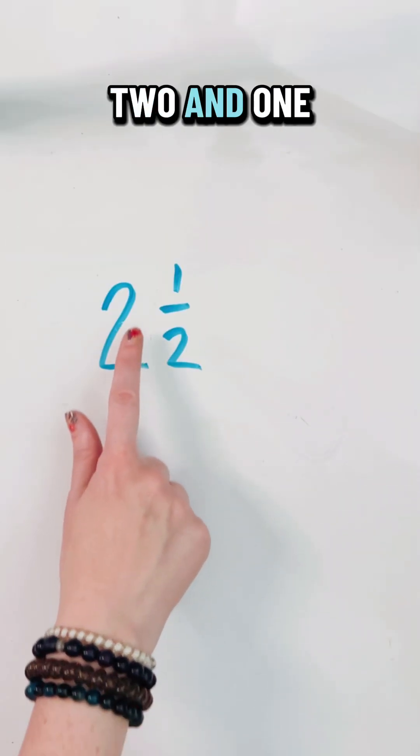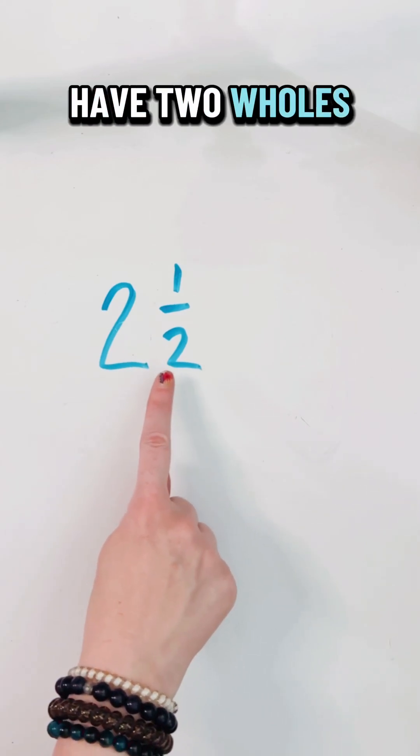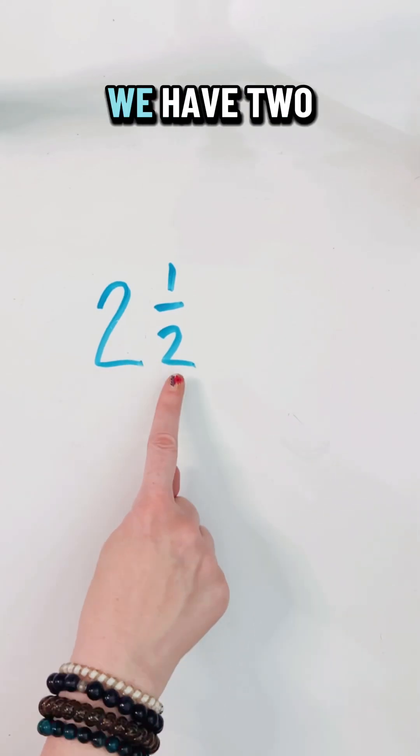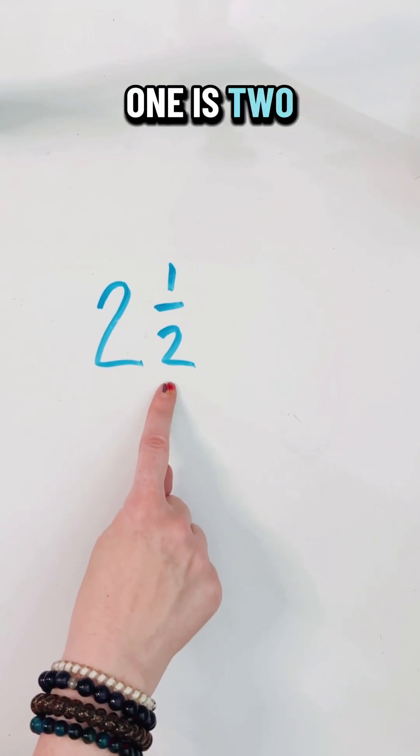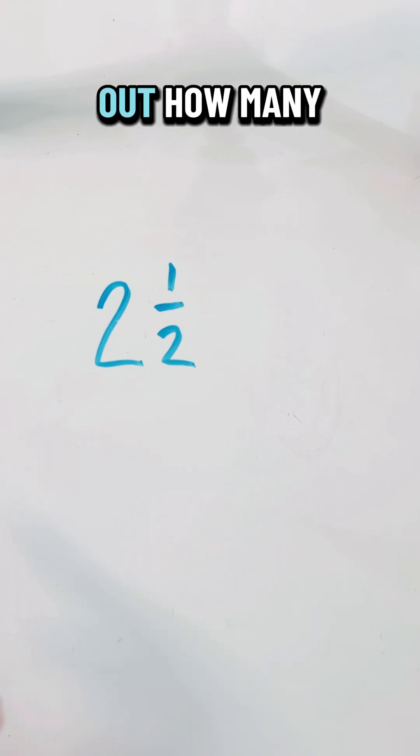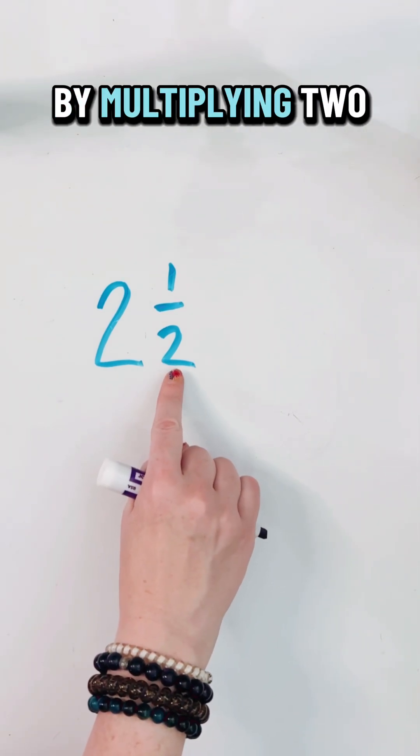The mixed number two and one half means we have two wholes and an additional half. If we have two wholes and each one is two pieces, we can find out how many pieces we have by multiplying.